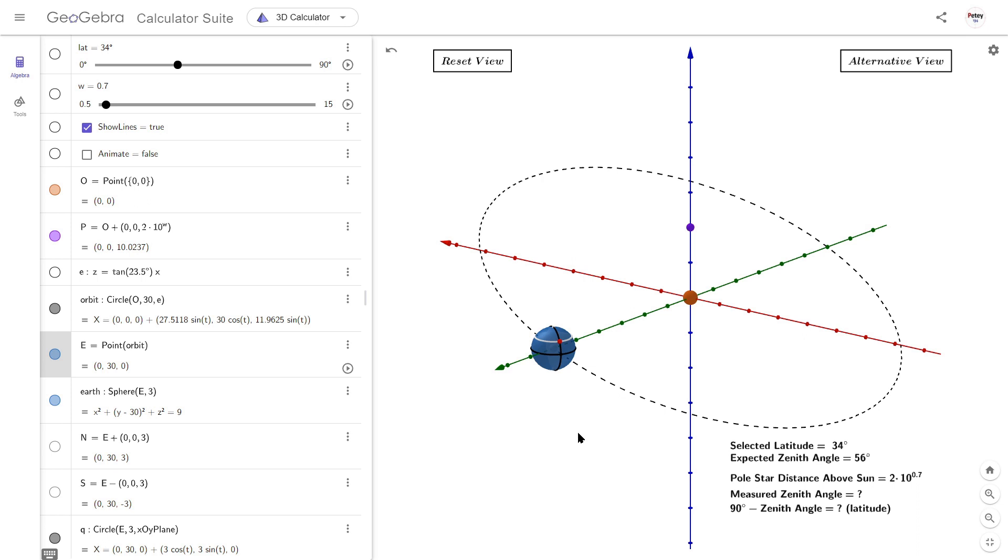So this animate box should work. So the earth is spinning and it's going around the orbital path.